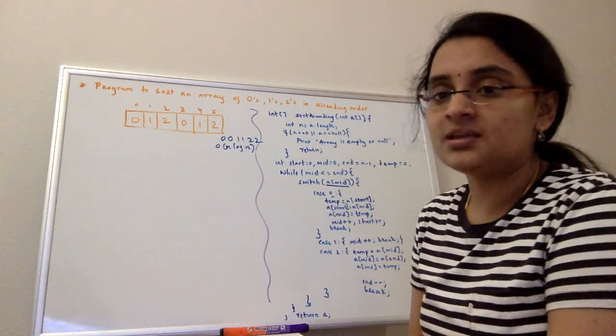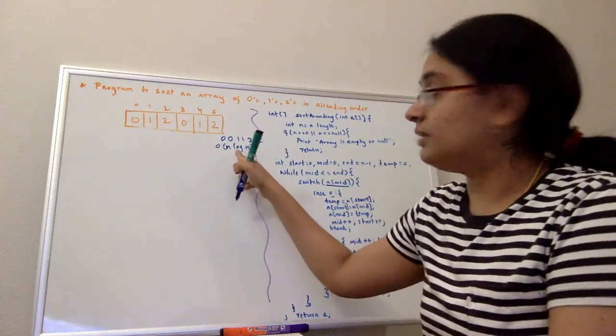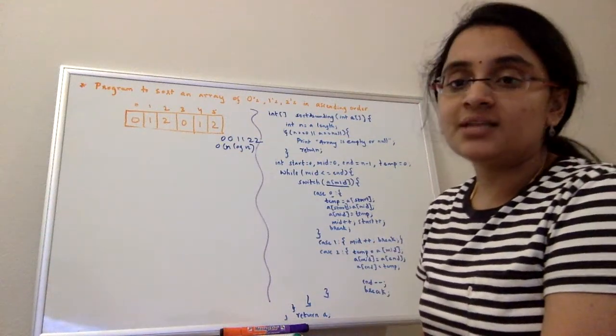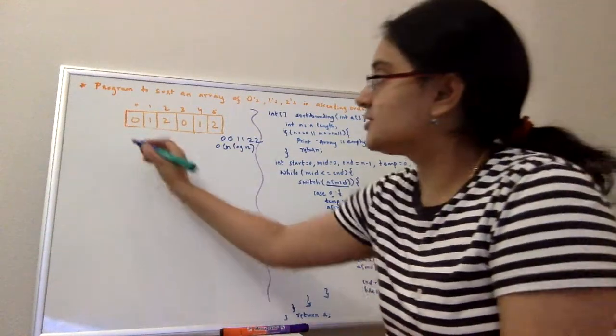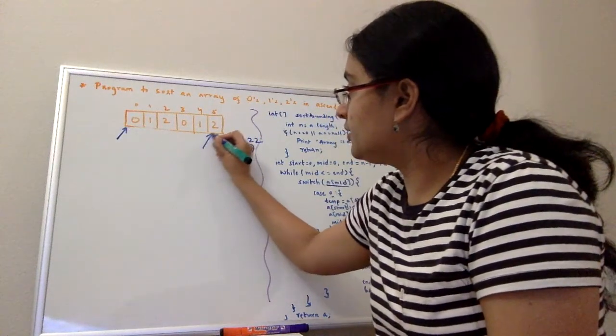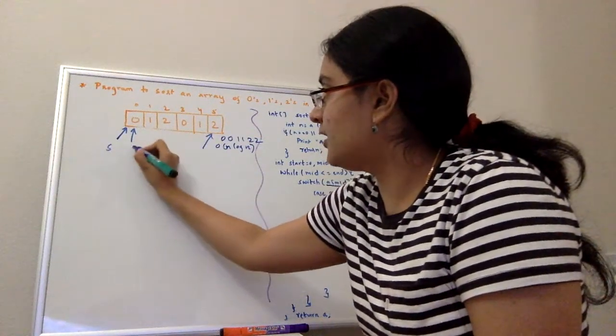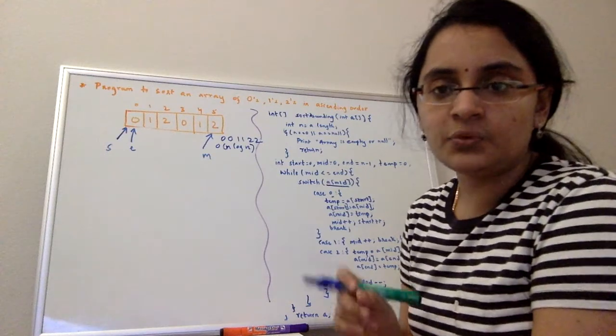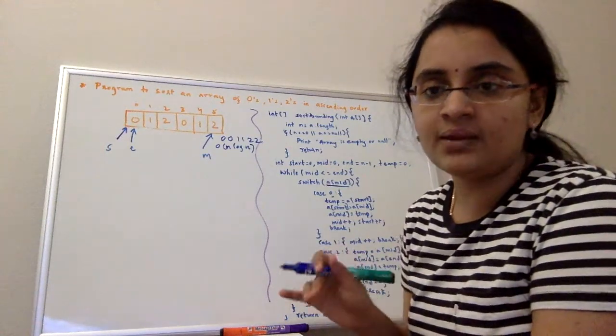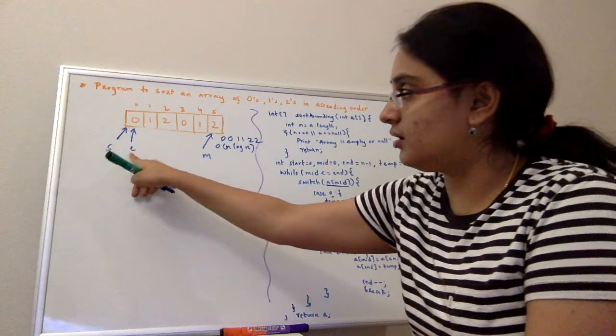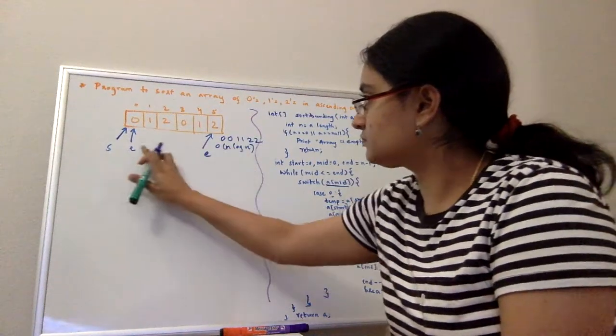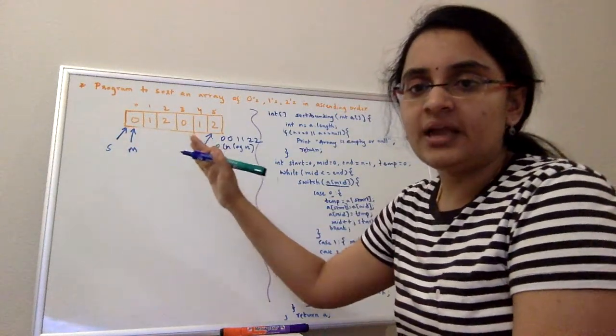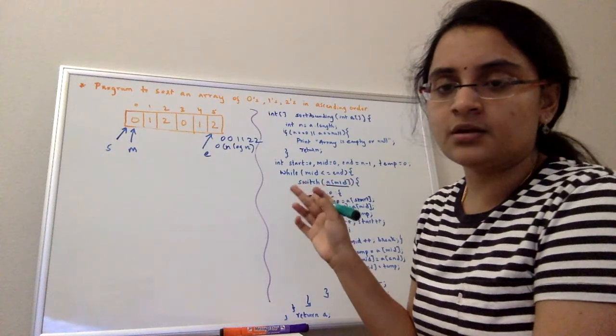Yes, we can do this in an efficient way and in a lesser time compared to quick sort. That is by using three pointers: a starting pointer, ending pointer, and a mid pointer. The starting pointer will keep track of zeros, end will keep track of twos, and the mid will oscillate between the starting and end pointers to sort the numbers.